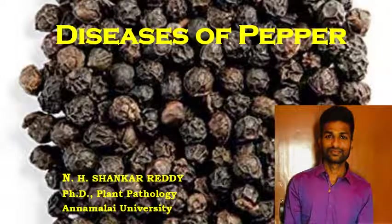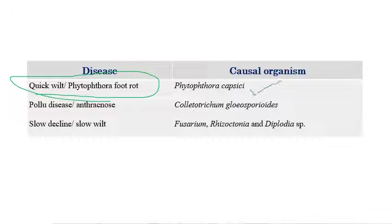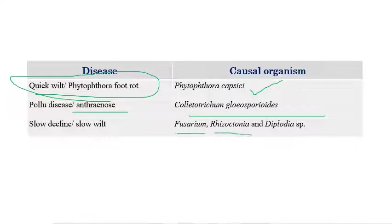Diseases of pepper. I'm Ennit Shankar Reddy, doing a PhD in Plant Pathology at Annamalai University. The important diseases in pepper are: quick wilt or Phytophthora foot rot, caused by Phytophthora capsici; pollu disease or anthracnose, caused by Colletotrichum gloeosporioides; and slow decline or slow wilt, caused by species of Fusarium, Rhizoctonia, and Diplodia. These three are very important diseases.